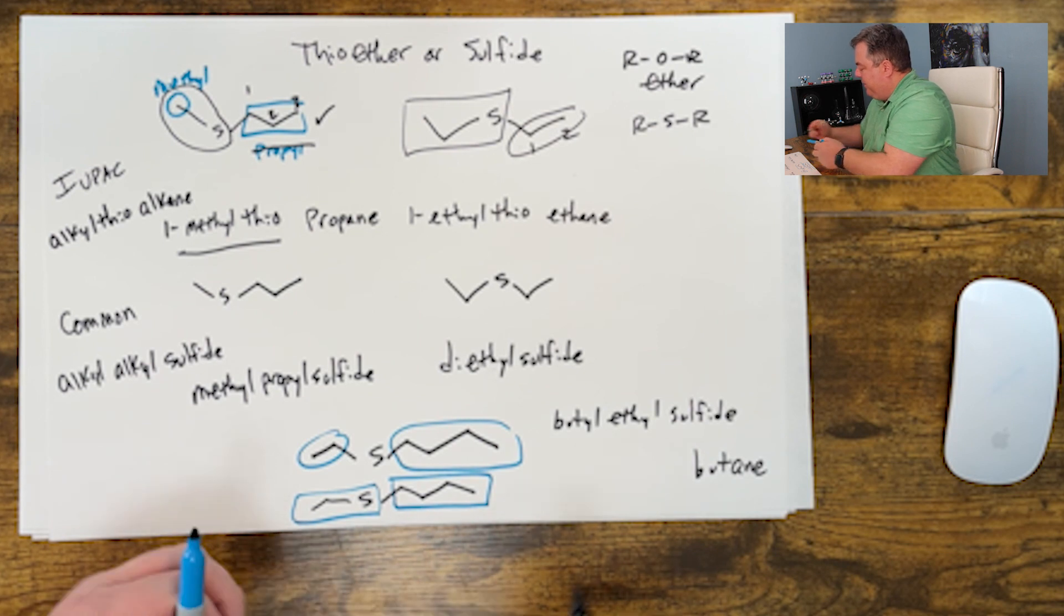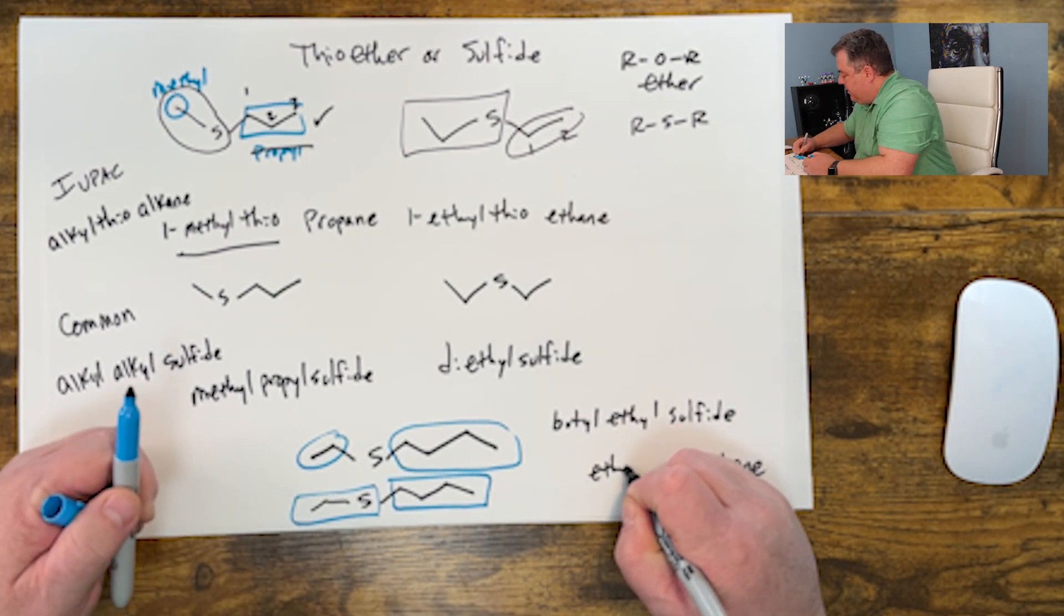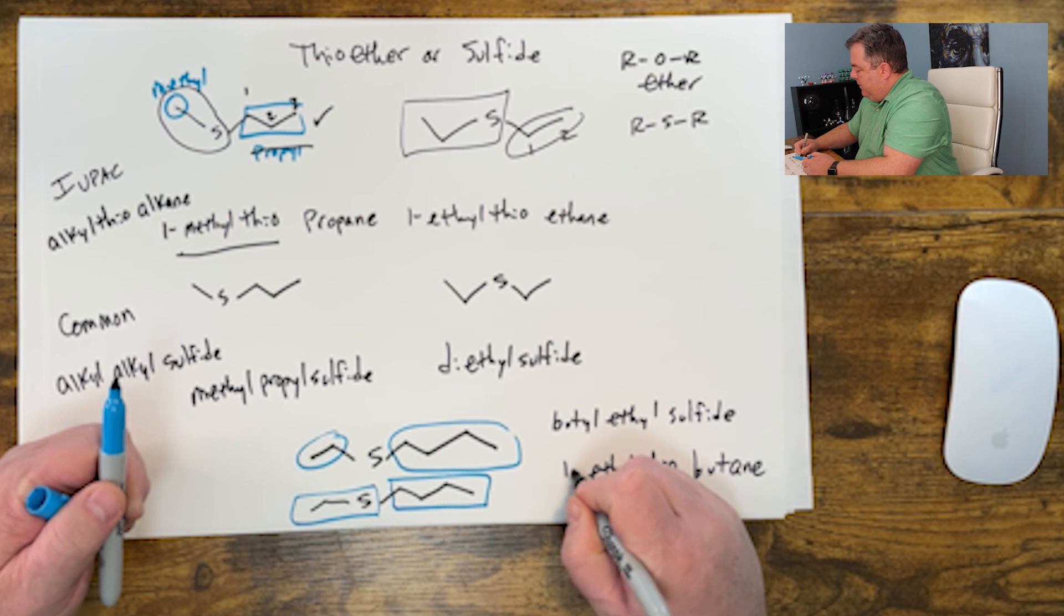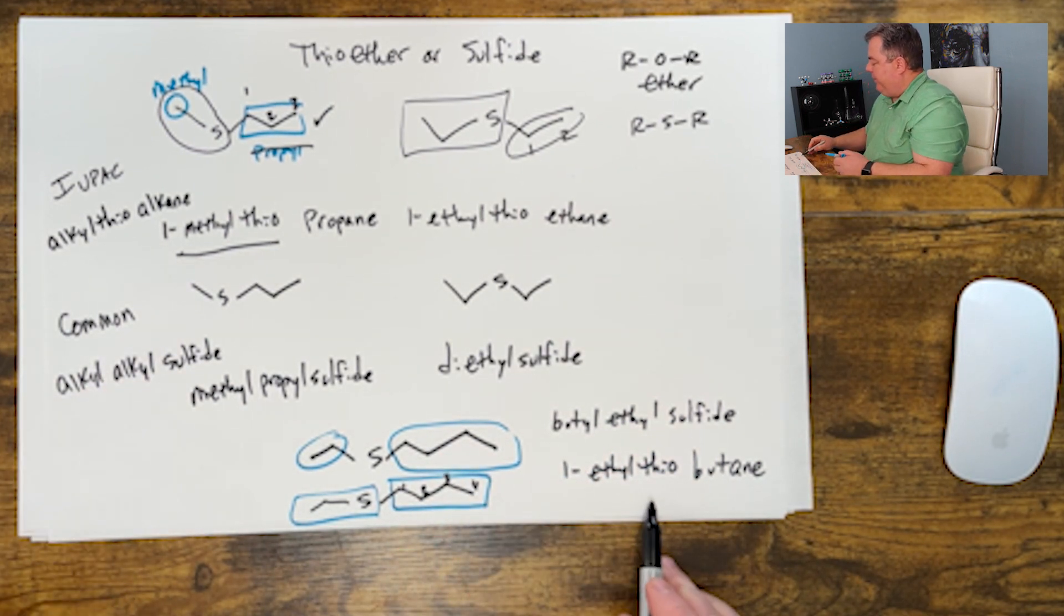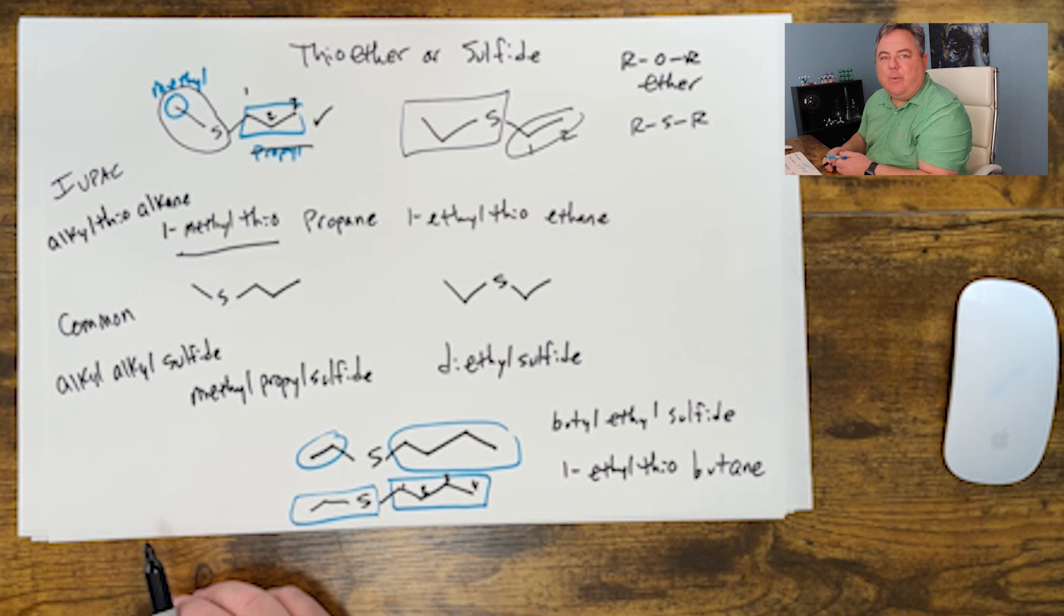And then we name this as a substituent: we have an ethylthio group. It'd be on carbon one of the butane, so 1-ethylthiobutane would be the IUPAC way of naming it.